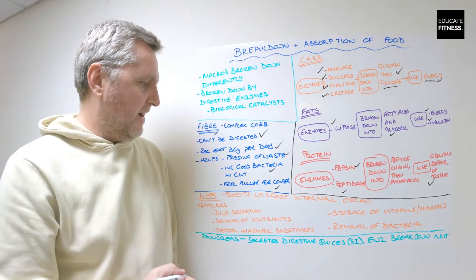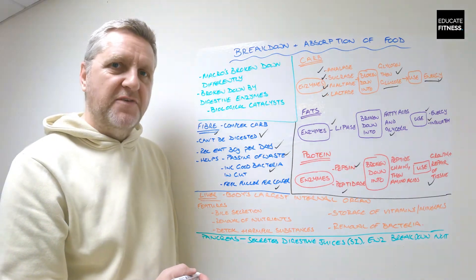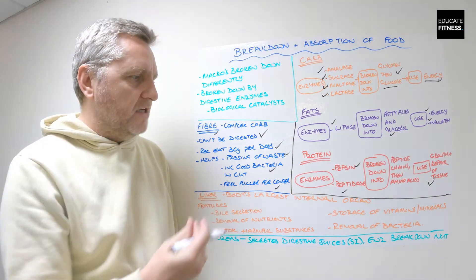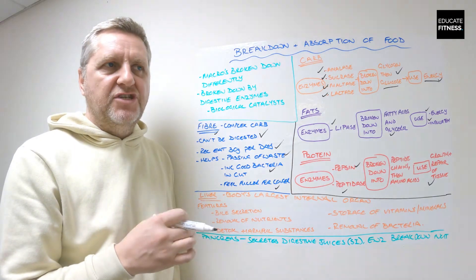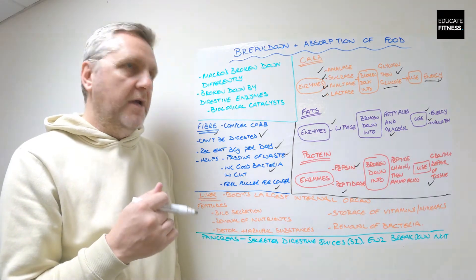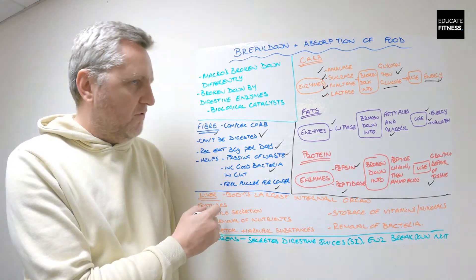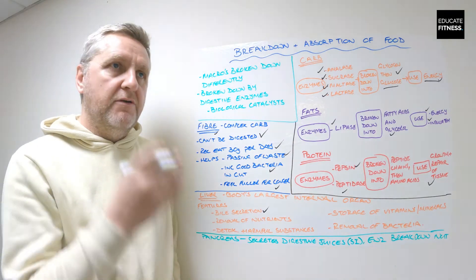And that basically is fiber. Next we've got liver. So liver is the body's largest internal organ, and many of the functions of the liver relate to digestion, the digestive system and also absorbing food.